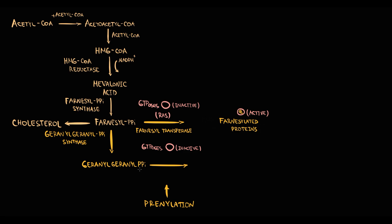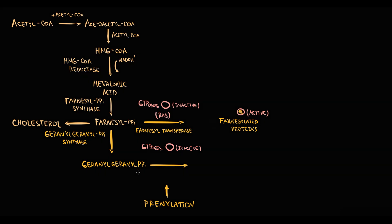The second pathway is called geranyl-geranylation. Geranyl-geranylation is provided by geranyl-geranyl transferase and is used for activation of RAC, RHO, and CDC42 GTPases. In the geranyl-geranylated state, they become activated.